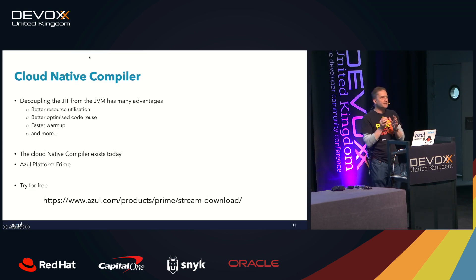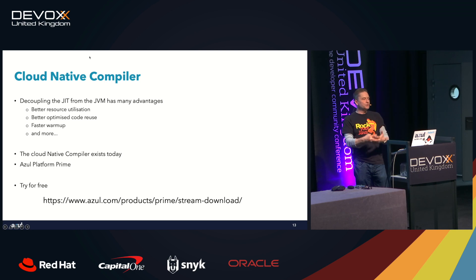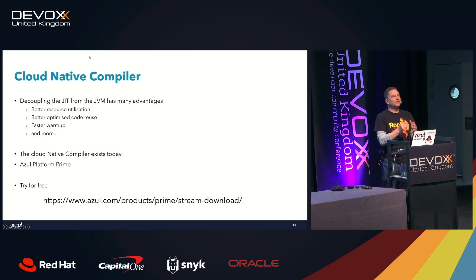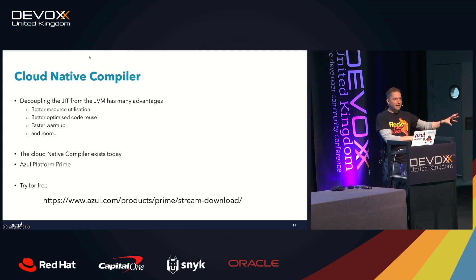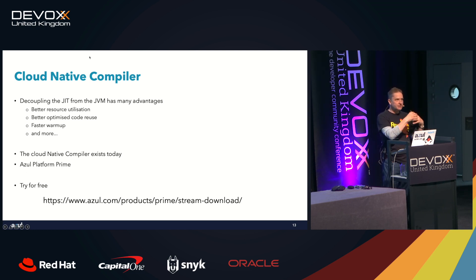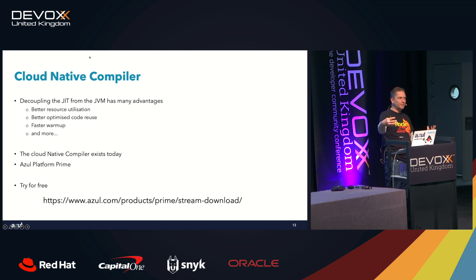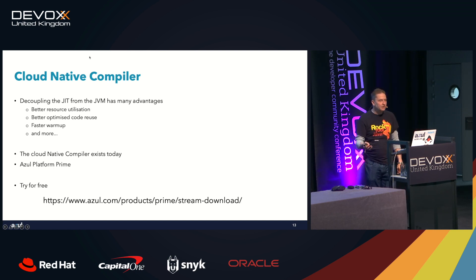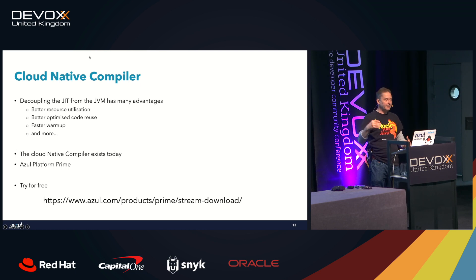The idea behind the cloud-native compiler is we decouple the JIT from the JVM, which gives us distinct advantages: better resource utilization and better optimized code for reuse. Because we now detach the JIT compiler, if we throw more resources at compilation as a service, we can go into much heavier optimization — the kind that takes longer to do — but by doing that we can deliver higher-performing code for the JVM, especially on startup. It gives us much faster warm-up time, better overall performance, and the best of both worlds in terms of CPU load and performance.